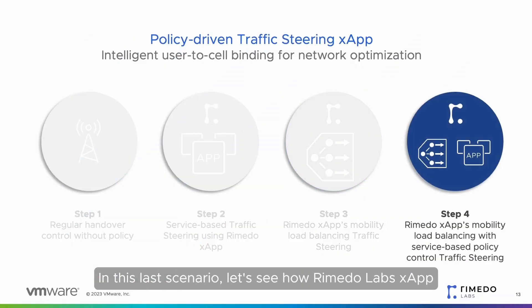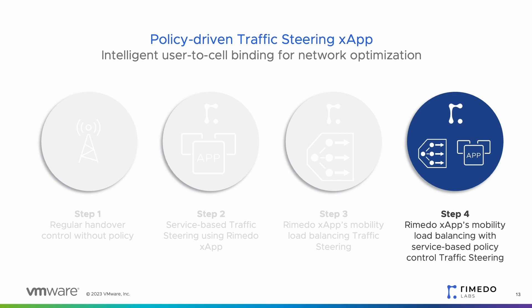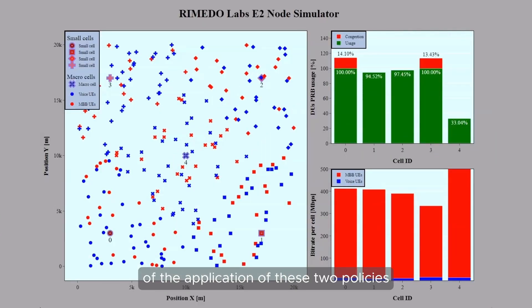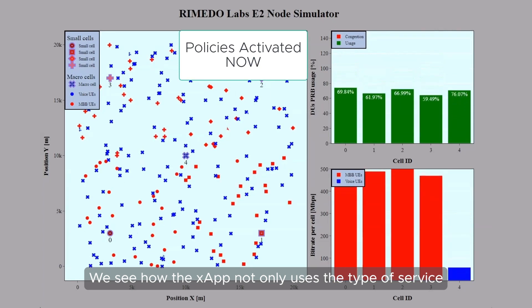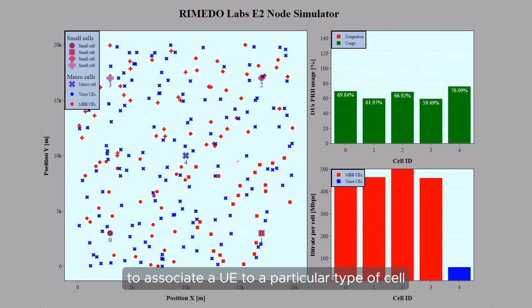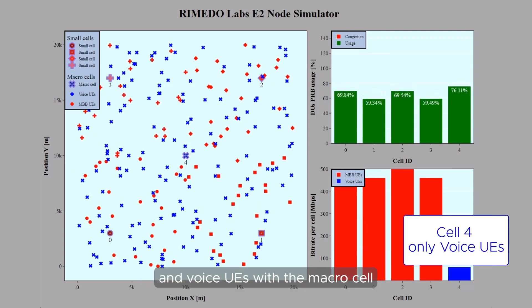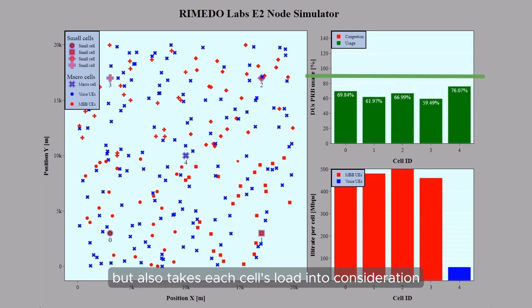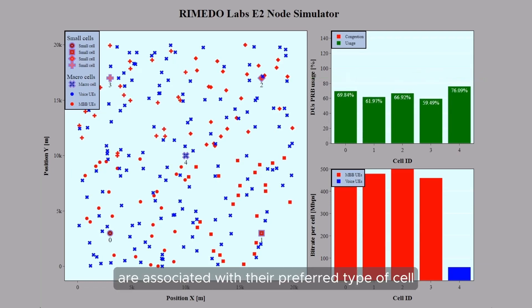In this last scenario, let's see how Remedo Labs X-App applies both mobility load balancing and service-based policy control to steer traffic. The GUI now shows the effect of the application of these two policies. The X-App not only uses the type of service to associate a UE to a particular type of cell — with MBB UEs associated with small cells and voice UEs with the macro cell — but also takes each cell's load into consideration when making the final decision. As a result, UEs are associated with their preferred type of cell with no congestion detected in any DU.